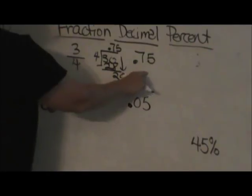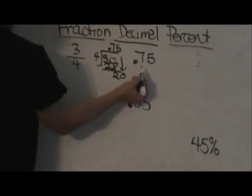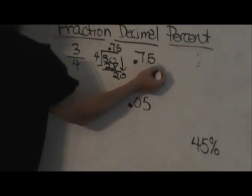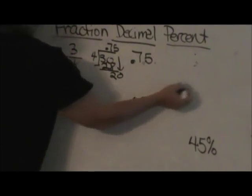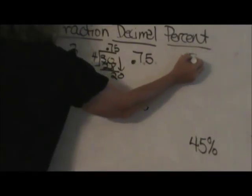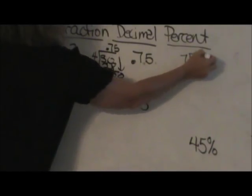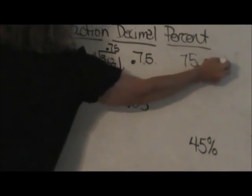Now to go from decimal to percent, I'm going to move my decimal two places to the right. So I move it one between the seven and the five and then behind the five. So it's going to be seventy-five point and I can put a couple zeros there. And that is my percent.